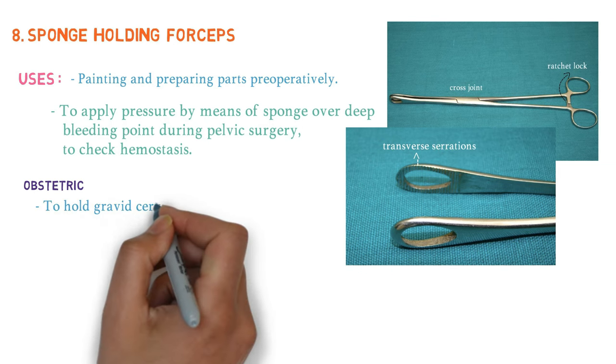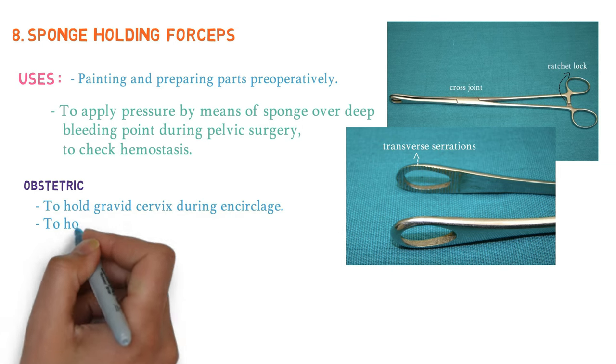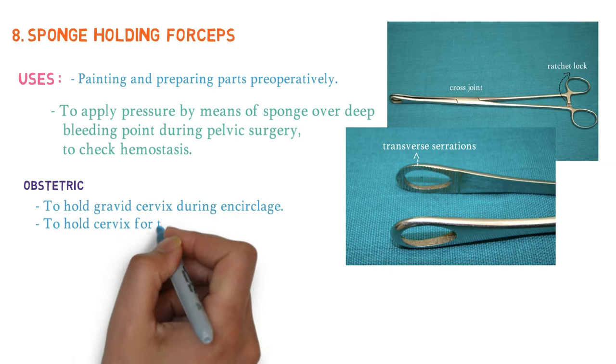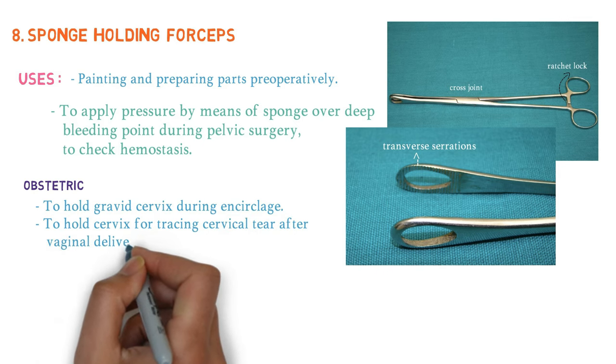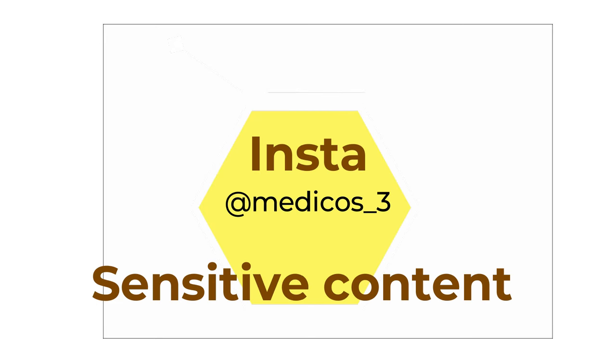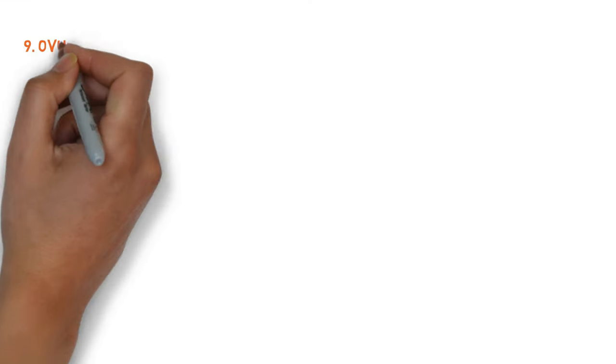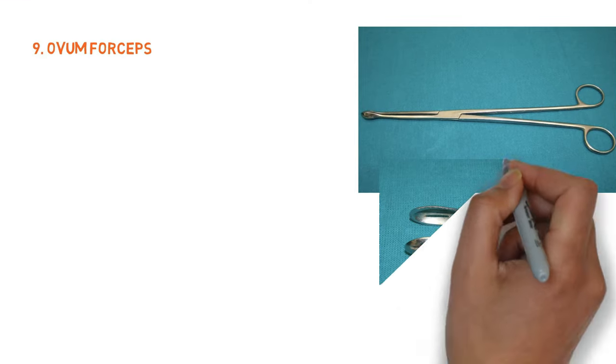In obstetrics, sponge holding forceps is used to hold the gravid cervix during cerclage and to hold the cervix for tracing cervical tear after vaginal delivery. These are the uses of sponge holding forceps — it is mainly used for painting before pre-operative procedures.